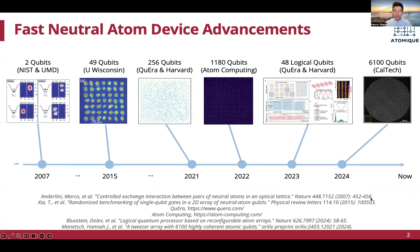Neutral atom quantum computing devices have a long history back to the early 2000s. For example, a 2-qubit device was built by NIST and UMD back in 2007. In recent years, advancements have been more than exciting. It only took four years to increase the number of qubits from tens to hundreds, even over 6000 in recent works. Quantum error correction with neutral atoms was also successfully demonstrated.